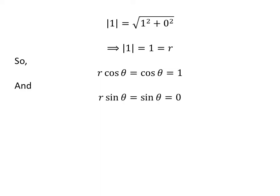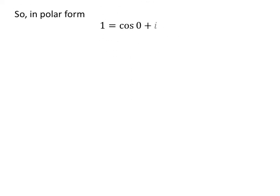Similarly, we get sine of theta is equal to 0. We know cosine of 0 is 1 and sine of 0 is 0. So the polar form of complex number 1 is cosine of 0 plus i times sine of 0.